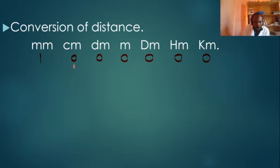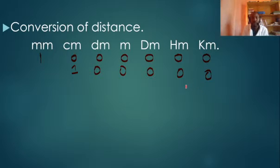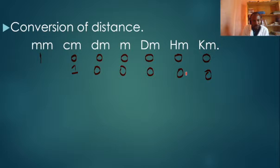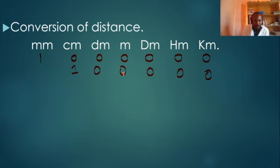Coming back: if we start from centimeters, we have five zeros, giving us 100,000 centimeters equals one kilometer. At hectometer level, 10,000 centimeters equals one hectometer. At the decameter level, 1,000 centimeters equals one decameter. And 10 centimeters equals one decimeter.